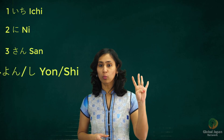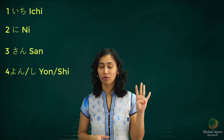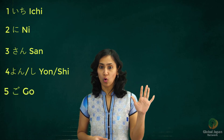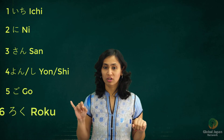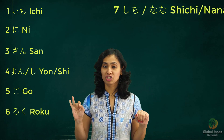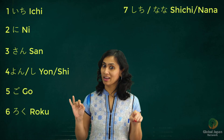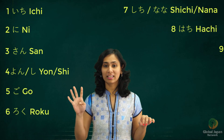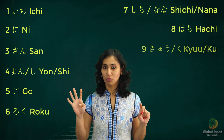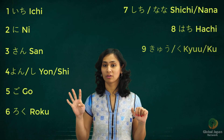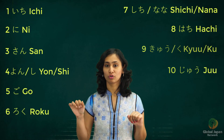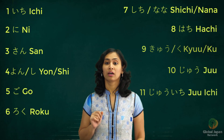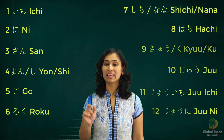There are two ways of calling the number 4: Yon or Shi. Go. Roku. Shichi or Nana. Hachi. Nine has two ways of calling: Kyu or Ku. Juu. Eleven: Juu Ichi. Twelve: Juu Ni.